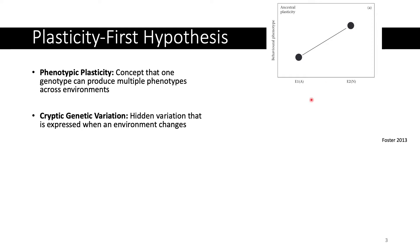The next concept is cryptogenetic variation, which is the idea that when an environment changes, individuals in the environment are going to differ in their individual degrees of plasticity. What that results in is a new distribution of phenotypic variation in the population in this new environment. And selection will be able to act on this cryptogenetic variation that's now exposed, to adjust the mean of a population in this new environment.